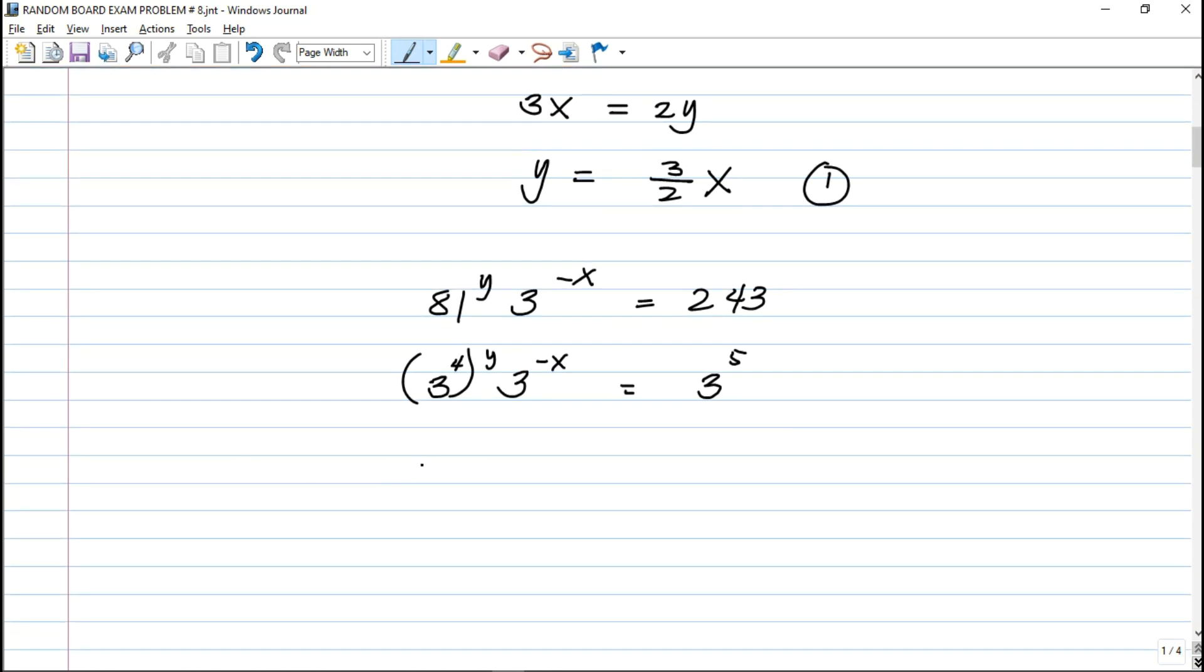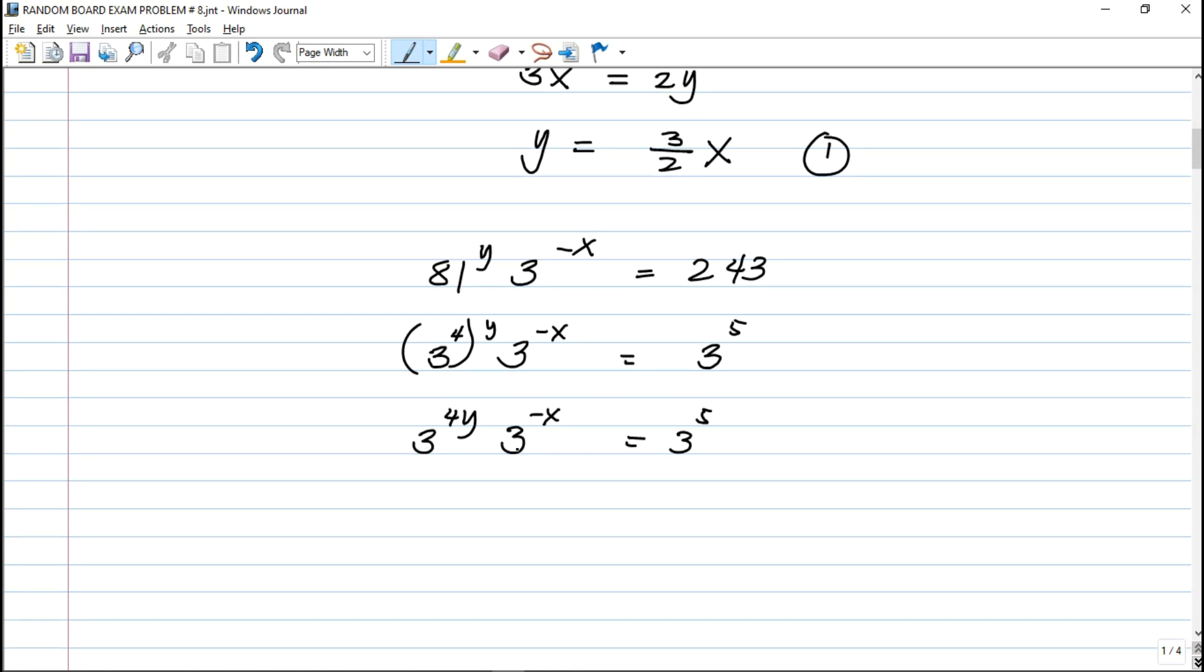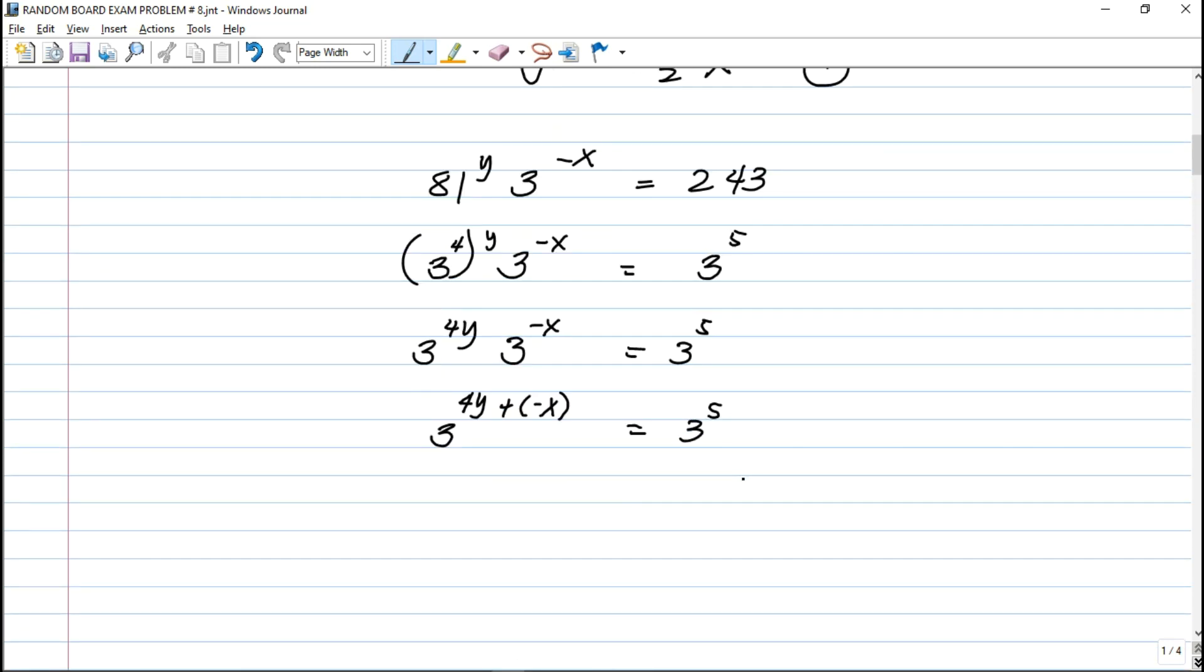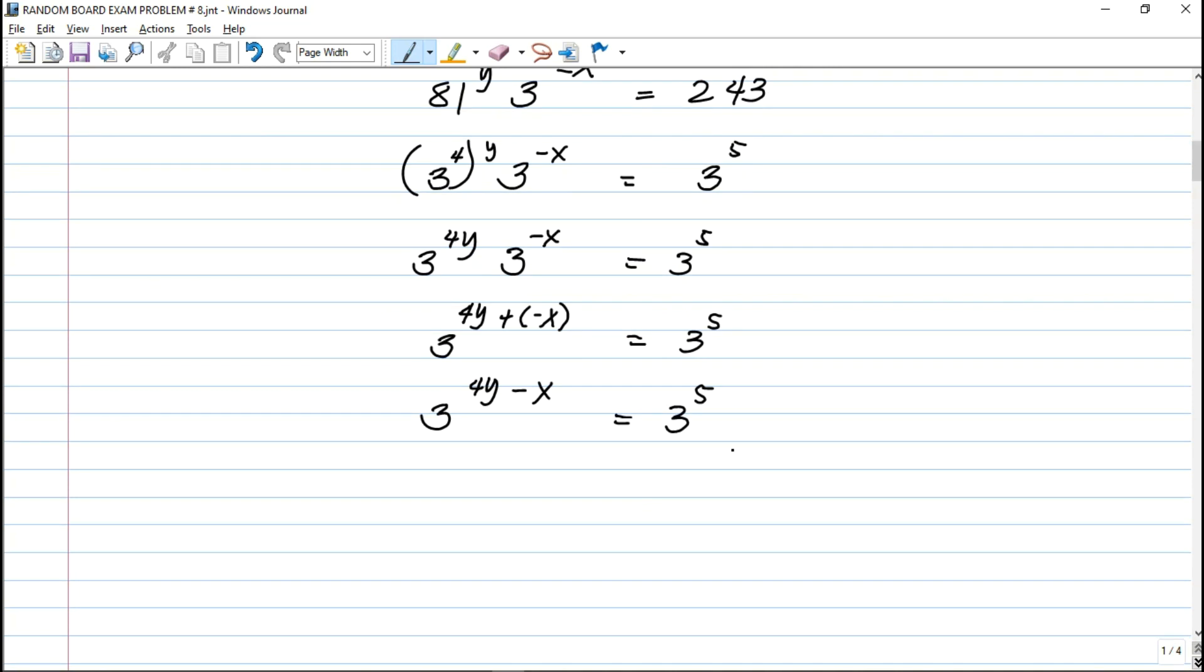We perform the laws of exponent. 3 raised to 4y times 3 raised to negative x, and we have 3 raised to 5. Laws of exponent - same base, we can actually add the exponent. This is 3 raised to 4y plus negative x. This is equal to 3 raised to 5. This can be expressed as 3, 4y minus x is equal to 3 raised to 5. Same base, we can equate the exponent. So that is 4y minus x is equal to 5. This is our equation number 2.